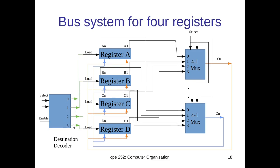We can use the destination decoder to select any one of the destination registers by activating the corresponding load input. The load inputs of the registers are connected with the outputs of the destination decoder. Based on the select line value, any one of the registers will have its load input activated, and that register will capture the data present on the output bus of the mux.